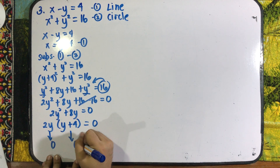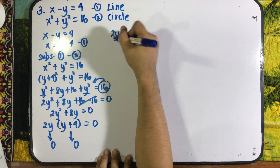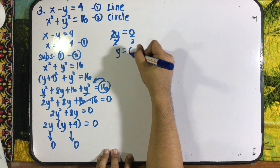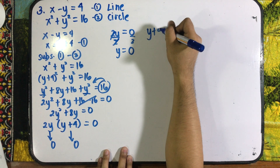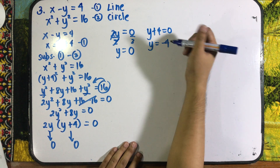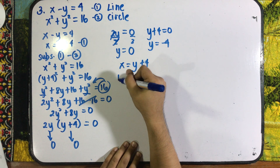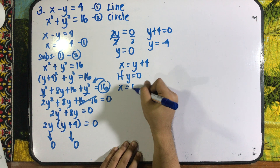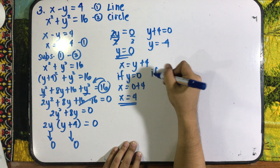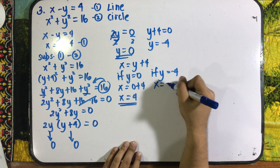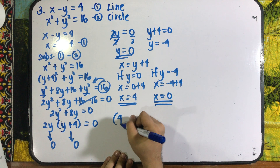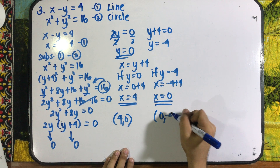Equating each factor to zero: from 2y equals 0, dividing both sides by 2 gives y equals 0. From y plus 4 equals 0, y equals negative 4. Now solving for x using x equals y plus 4: if y equals 0, then x equals 0 plus 4, so x equals positive 4. If y equals negative 4, then x equals negative 4 plus 4, so x equals 0. Our solutions are (4, 0) and (0, negative 4) — two intersections.